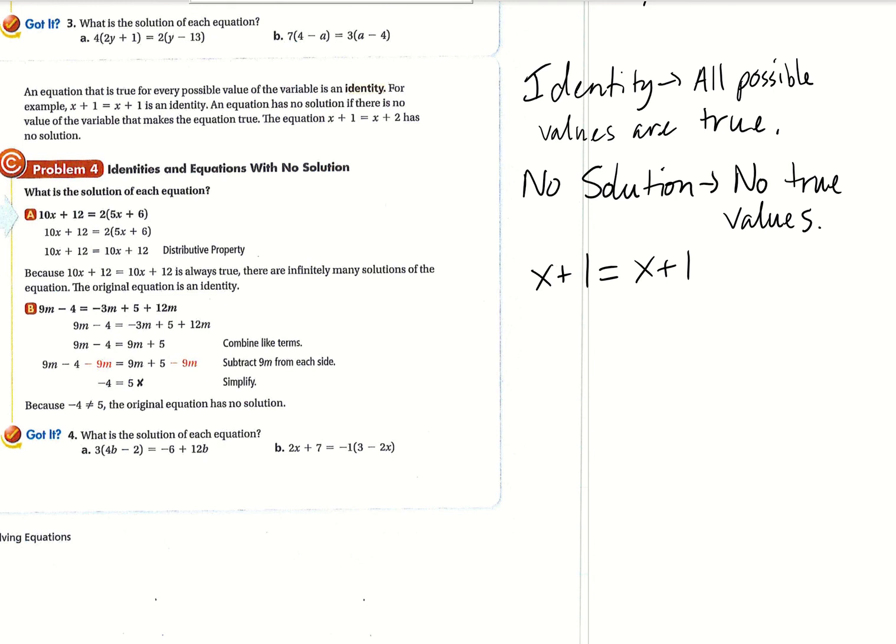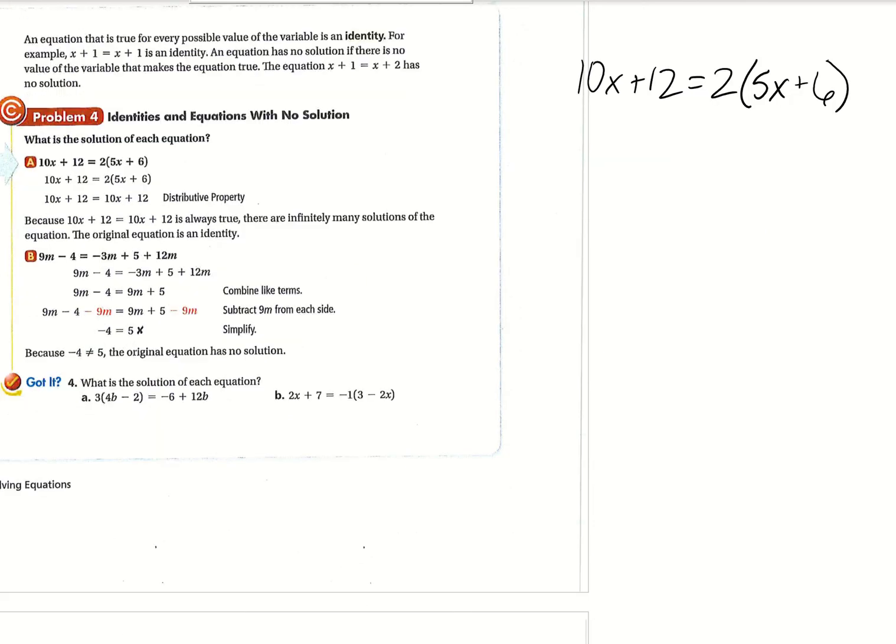And then one that would be no solution is if kind of the same thing, X plus one, but then it was equal to X plus two. All right. There's nothing you can plug in for X here that would make make that equation true. Okay. So just to show you a real quick example, this is for a, we have 10X plus 12 equals two times five X plus six.